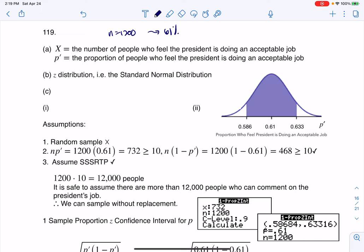As soon as I hear 61%, I know I'm in proportion land, and that also means I'm going to be using a Z-star critical value. We're interested in the population proportion of people who feel the President is doing an acceptable job. I saw another word of proportion, so it's another clue to help me with which land I'm in.